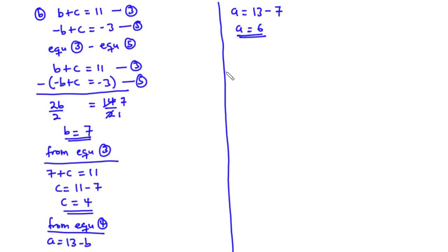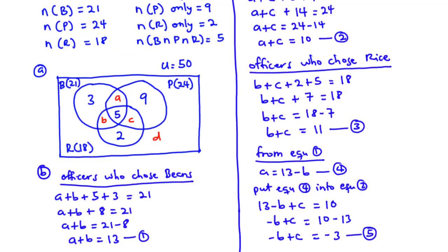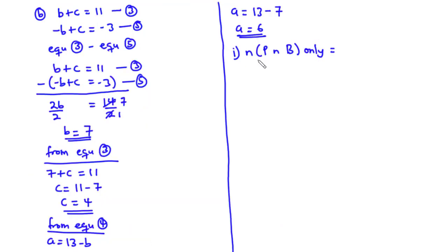For Part BI, we need the number of officers who chose plantain and beans only. From the Venn diagram, plantain and beans only corresponds to the region labelled A. Since A equals 6, the number of officers who chose plantain and beans only is 6.